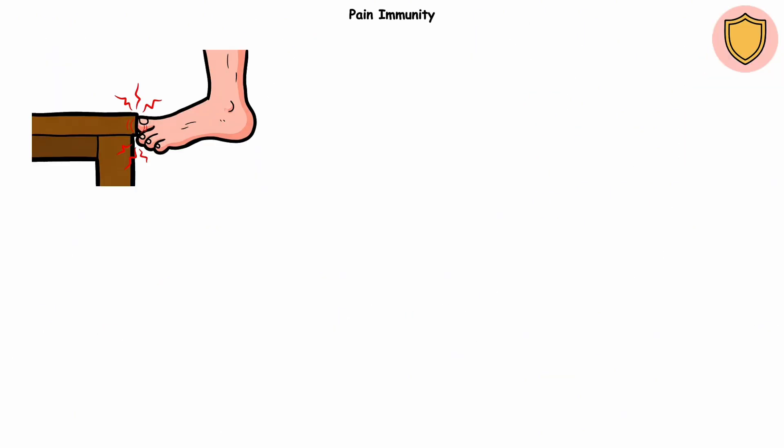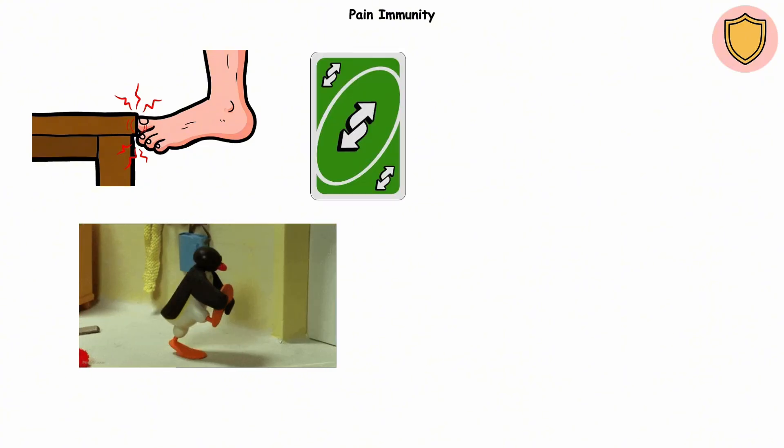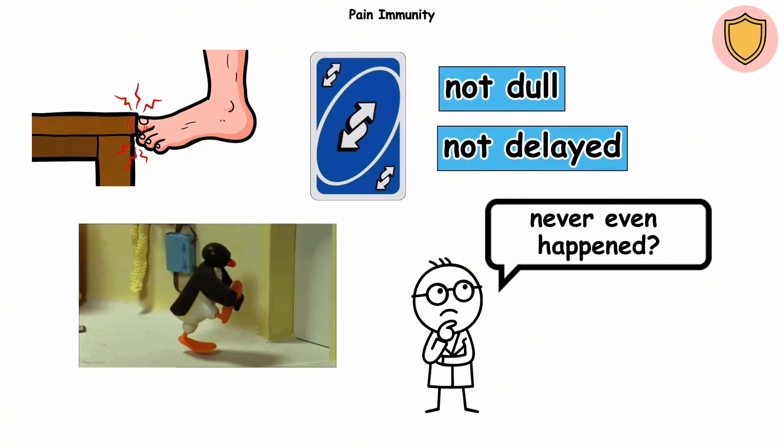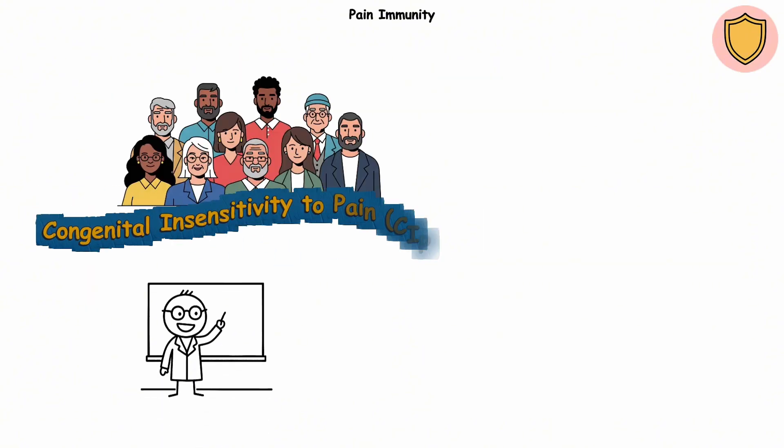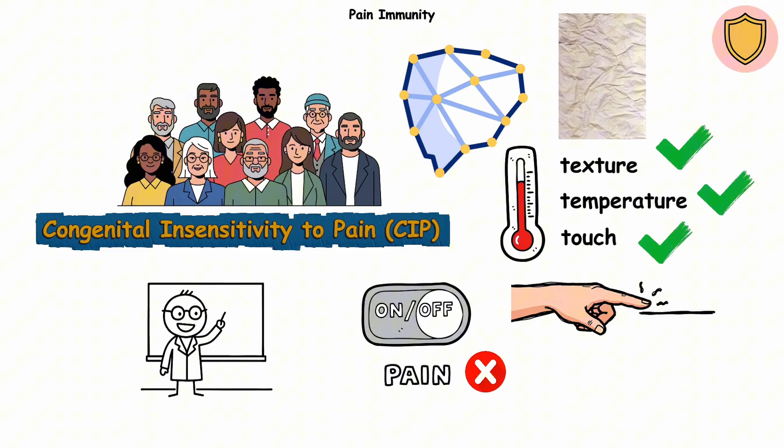Pain Immunity. You stub your toe on the coffee table. Instant sharp pain and expletives start flowing. But what if that pain never showed up? Not dull, not delayed, like it never even happened. That's reality for people with congenital insensitivity to pain. Their nerves can feel texture, temperature, and touch perfectly. But pain is turned off.